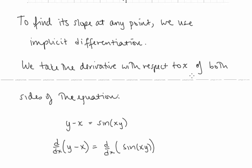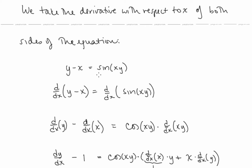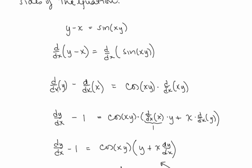We take the derivative with respect to x of both sides of the equation. Starting with y minus x equals sine of xy, we take the derivative with respect to x of both sides. On the left we have the derivative with respect to x of y, minus the derivative with respect to x of x. On the right we use the chain rule: cosine of xy multiplied by the derivative with respect to x of xy. The derivative of y with respect to x is dy/dx, and the derivative of x with respect to x is just 1.